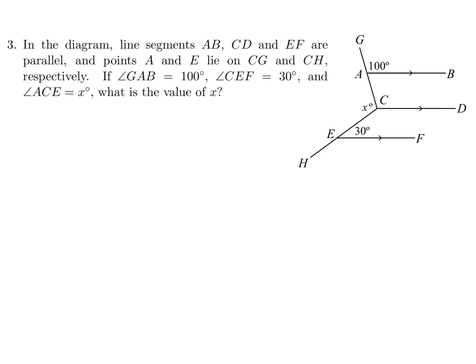In the diagram, line segments AB, CD, and EF are parallel, and points A and E lie on CG and CH respectively. If angle GAB is 100°, angle CEF is 30°, and angle ACE is x, what is the value of x? Okay, do some angle chasing.